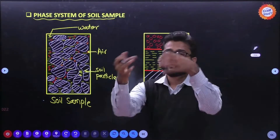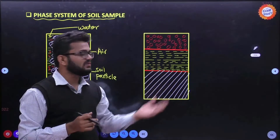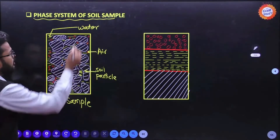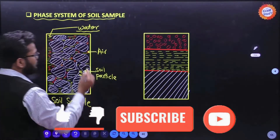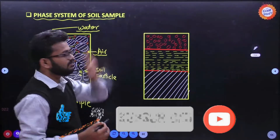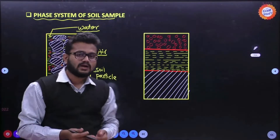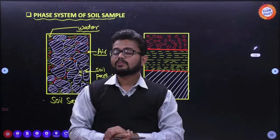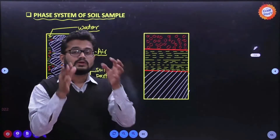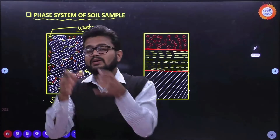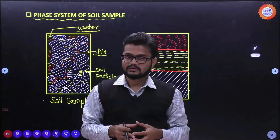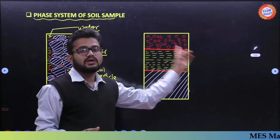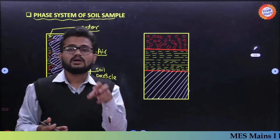To simplify the complex soil sample, we show the soil particles separately, the water separately, and the air separately. Together these are three elements: first element, second element, third element. This is called the three-phase system. The phase system diagram is nothing but the diagrammatic representation of the elements present in the soil sample.